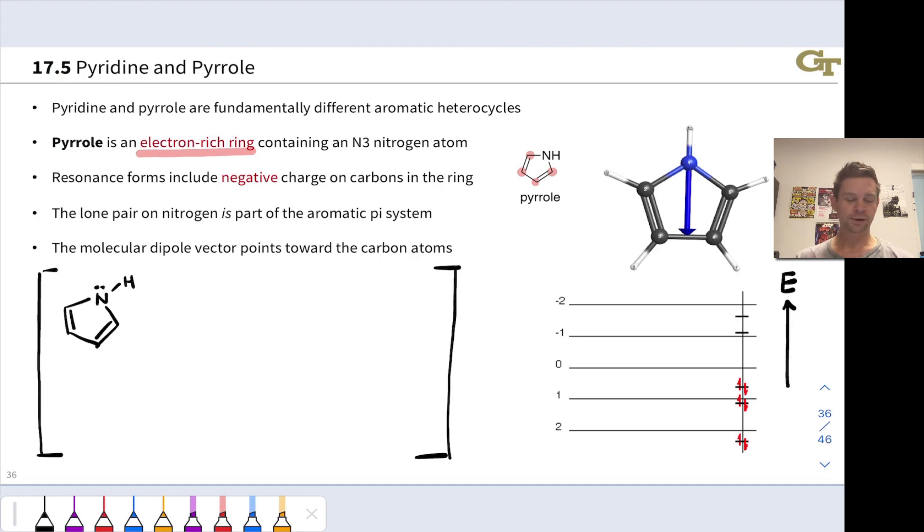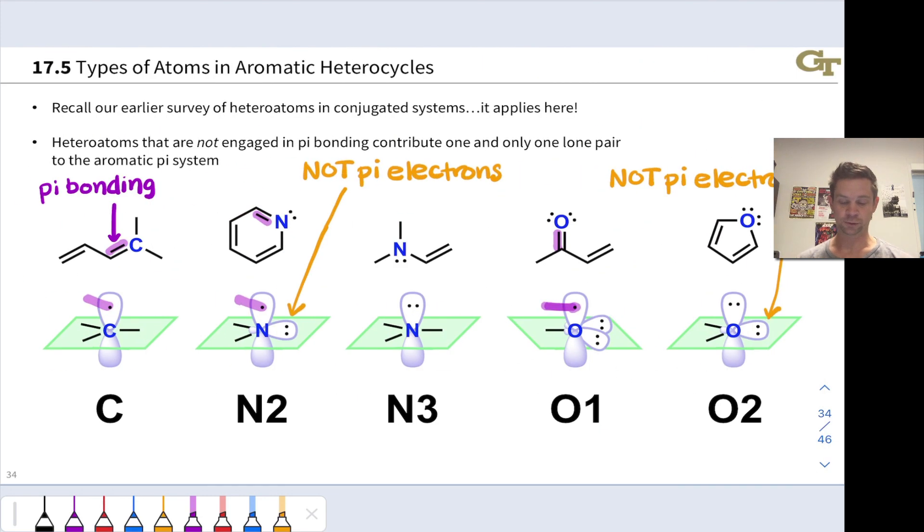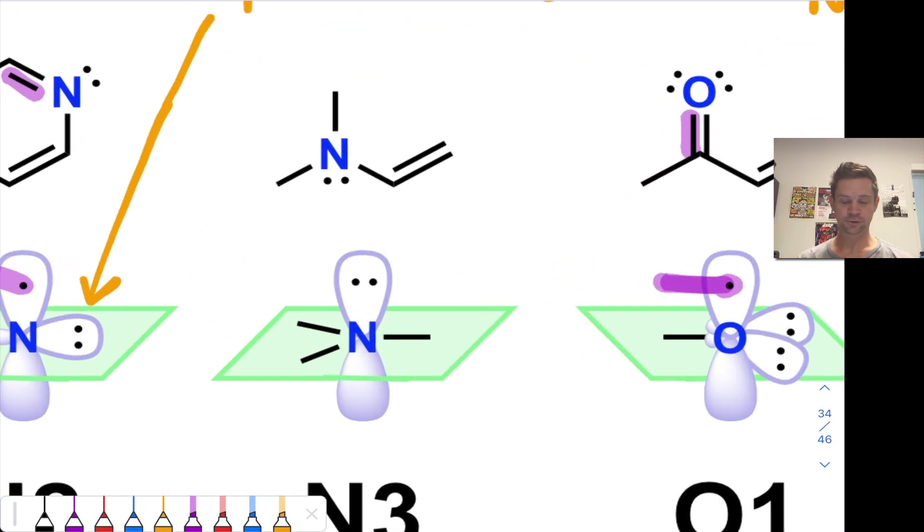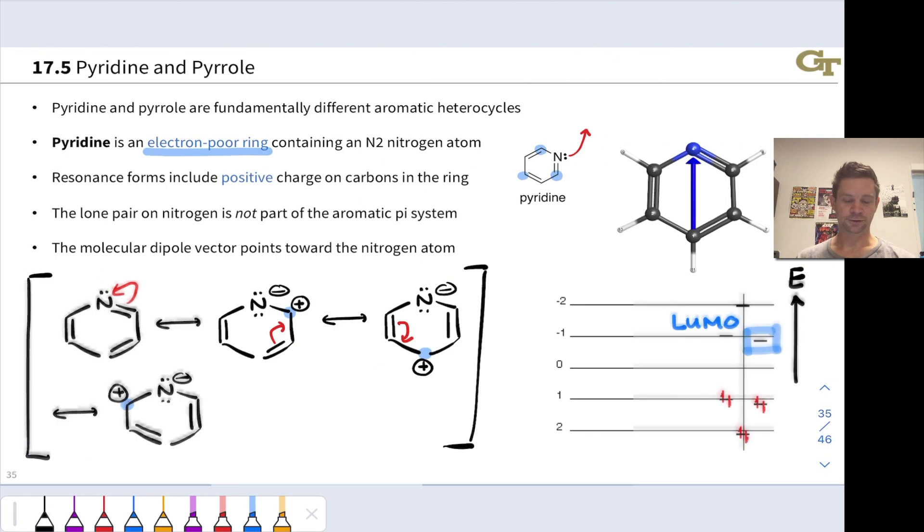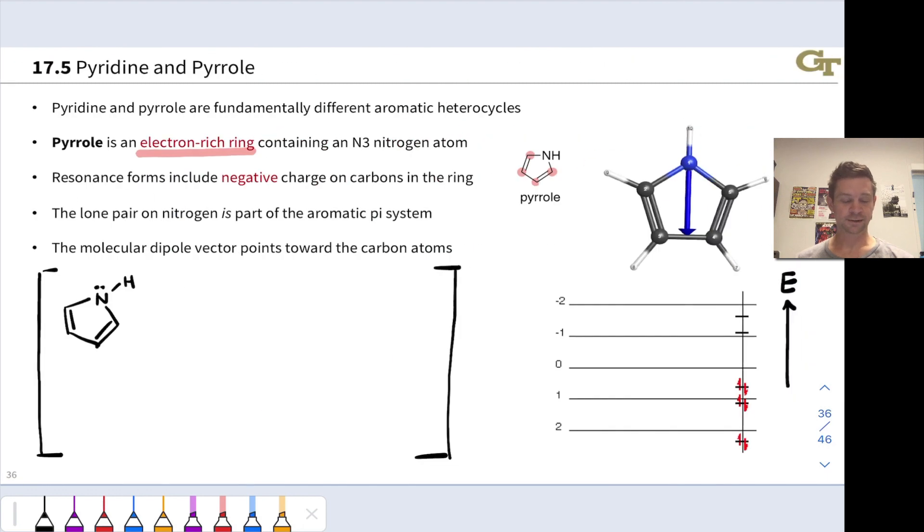Now, the lone pair on nitrogen is part of the aromatic pi system, and again, if we roll back to our picture of the N3 nitrogen here, that lone pair can and does occupy a p orbital on the N3 nitrogen with only single bonds at the nitrogen. And so that lone pair is part of the pi system, and we can engage it in resonance involving the double bonds nearby. So, for example,